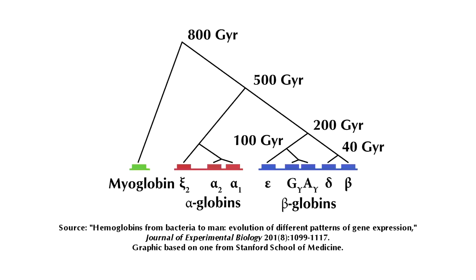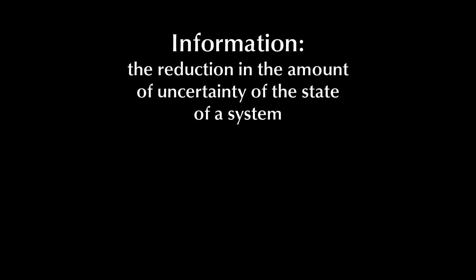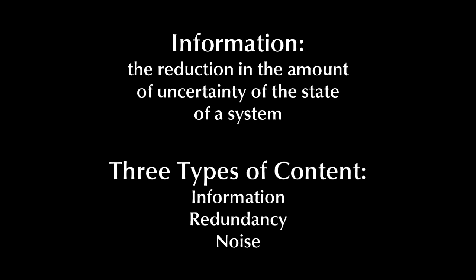So the next time you hear someone claim that evolution cannot increase information, you'll know better. And if they stubbornly cling to this incorrect notion, just ask them if they can tell you what the scientific definition of information is, and what the three kinds of content are. You already know the answer to these questions. If they can't answer them, then they aren't in any way qualified to say what is information and what isn't — and you'll know not to listen to them about anything else, either.